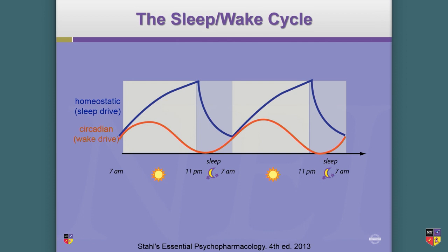When these two things are in sync, we call this the opponent process model. They're fighting each other, and when they are in sync, you are appropriately awake all day and appropriately asleep all night. If they become dis-synchronous, you start getting into disorders. The critical points are these junctions — what's your nighttime, what's your morning — and do these two processes work together in sync? Then you're okay.